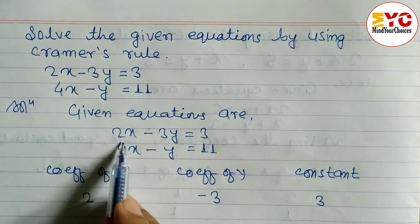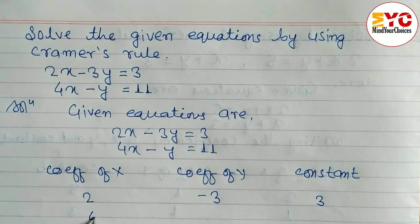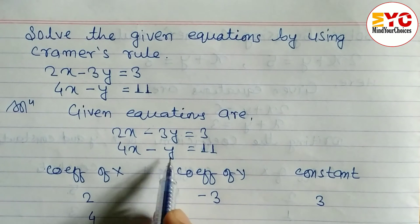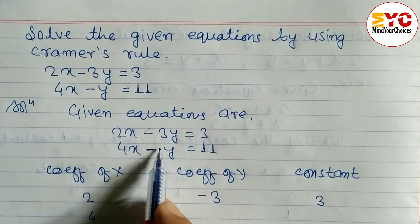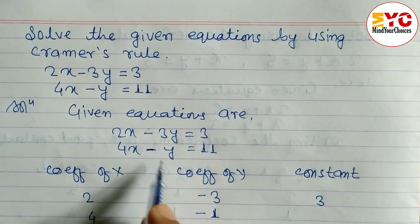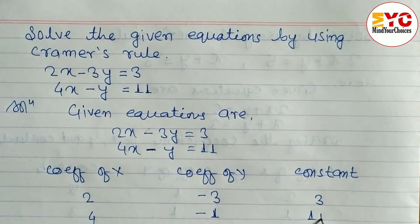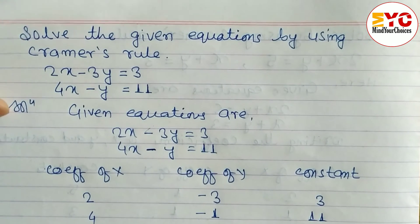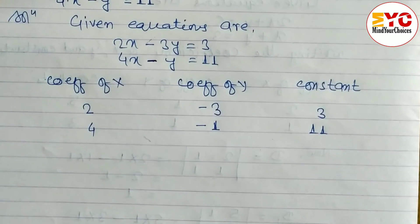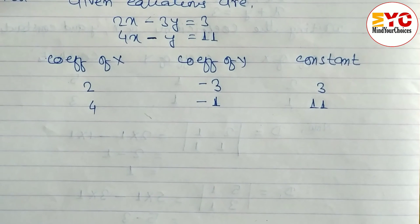Similarly, in the second equation, the coefficient of x is 4, the coefficient of y is minus 1, and the constant is 11. Now we have to find the values of D, D1, and D2 using Cramer's rule.